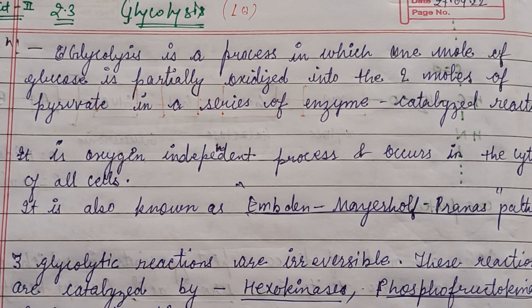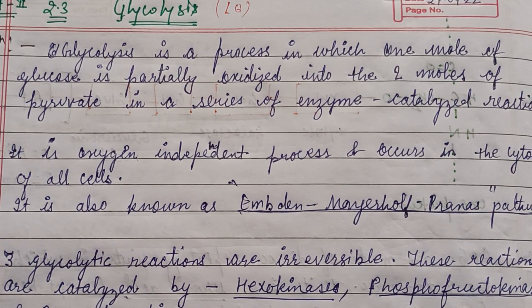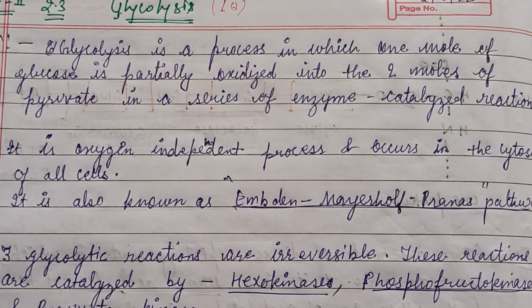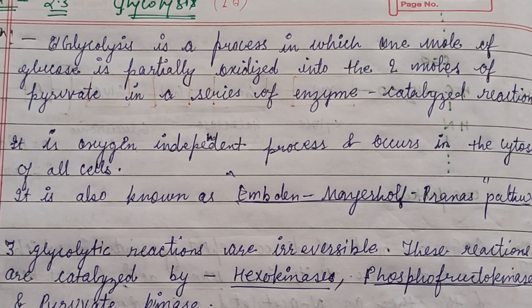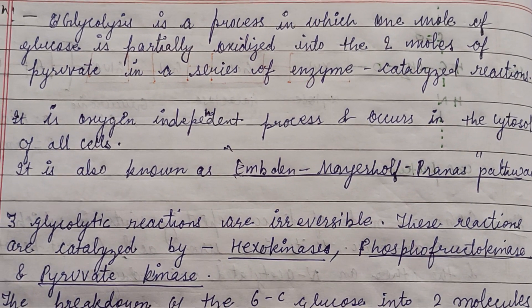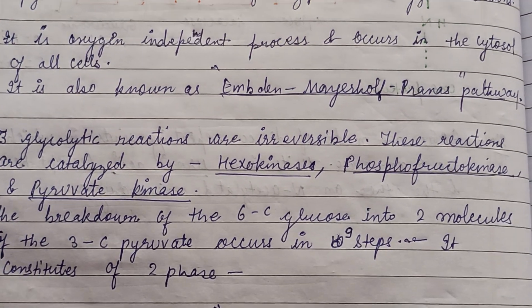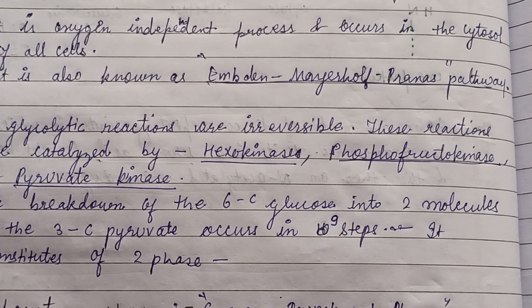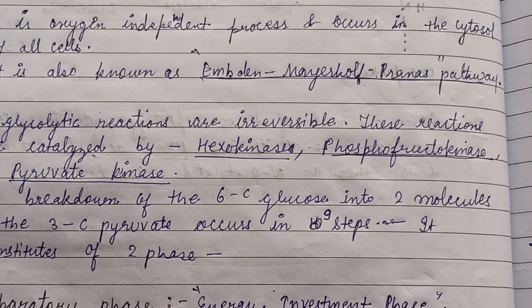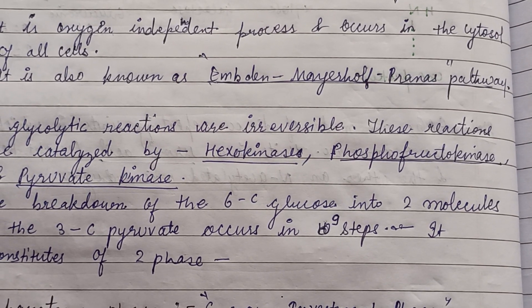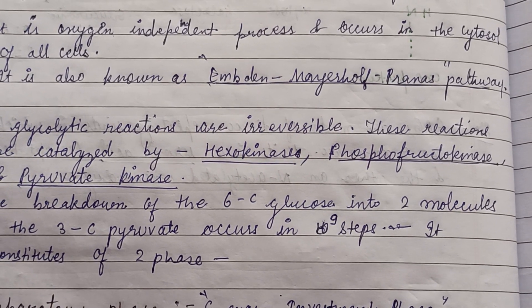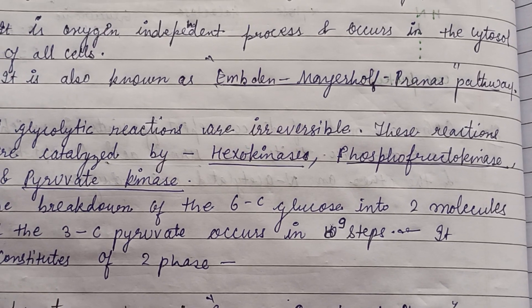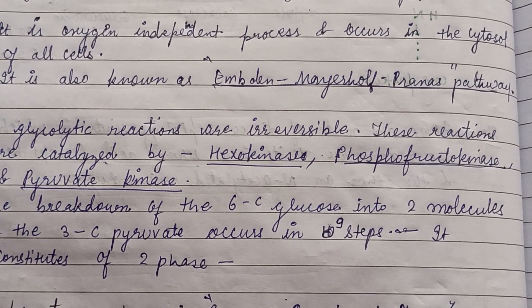Good morning to all of you. Today we are going to see the glycolysis process. It is a process in which one mole of glucose is partially oxidized into two moles of pyruvate in a series of enzyme-catalyzed reactions. It was given by Embden-Meyerhof-Parnas pathway, three scientists, and is also known as the Embden-Meyerhof-Parnas pathway.